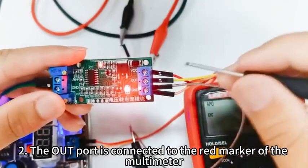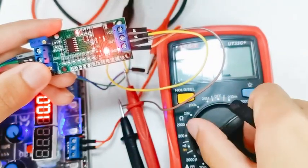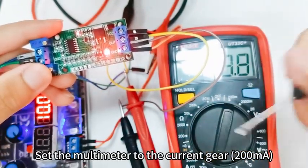Step 2: The A port is connected to the red marker of the multimeter. Set the multimeter to the current gear to 100mA.